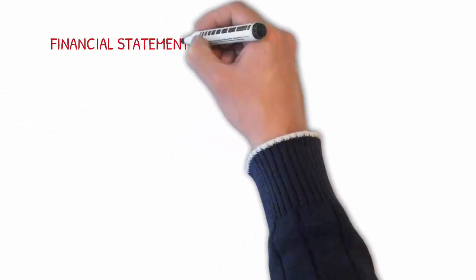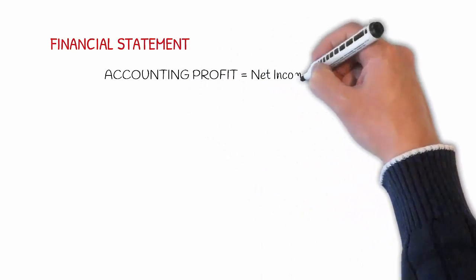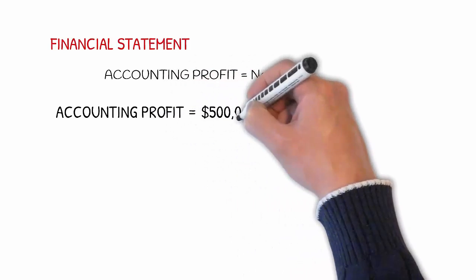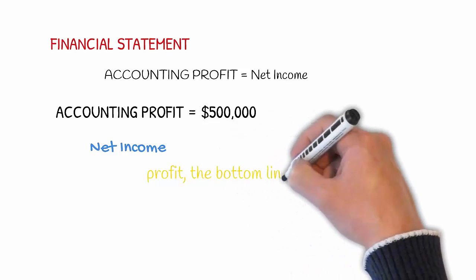Accounting profit has the famous name net income. The net income always shows in the income statement on the bottom line. It is the most viewed number in the financial statements of the company. Net income is also part of retained earnings.